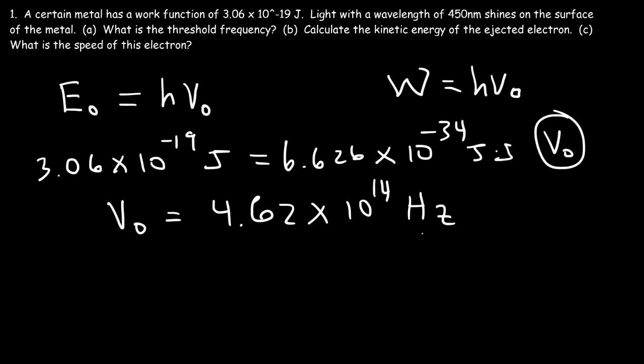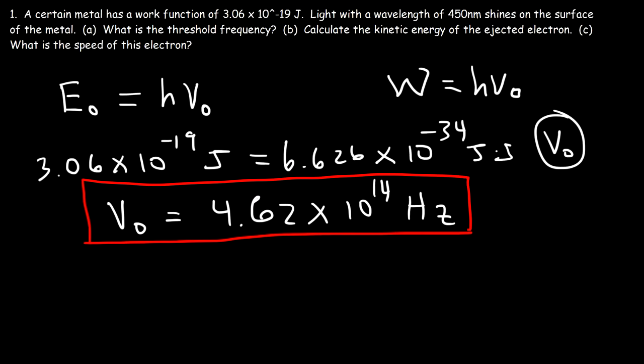Unless you shine light with a frequency equal to or greater than 4.62 times 10 to the 14 hertz, no electrons will be ejected off the surface of this metal. The frequency has to be equal to this number or higher. If it's less than this number, the electrons will not leave the metal — they'll stay on it.